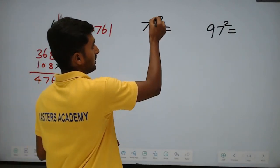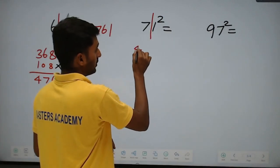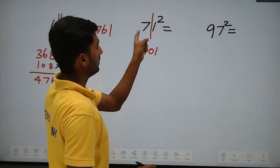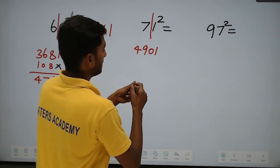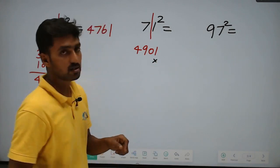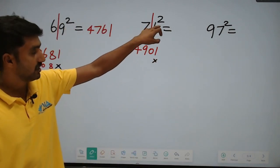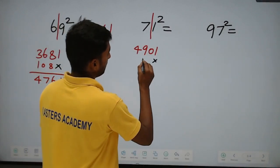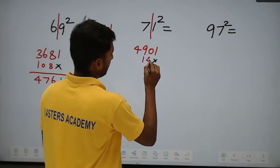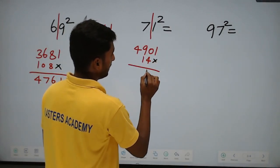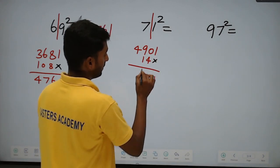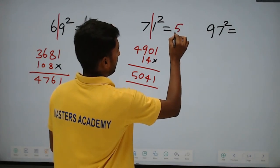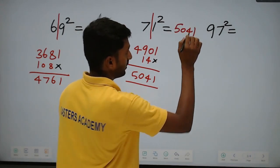For 71 squared: 7 squared equals 49, 1 squared equals 01. Multiply: 7 into 1 equals 7, double it to get 14. Adding: write 1, carry 1; 4 plus 0 plus 1 equals 5 — giving 5041. So 71 squared equals 5041.